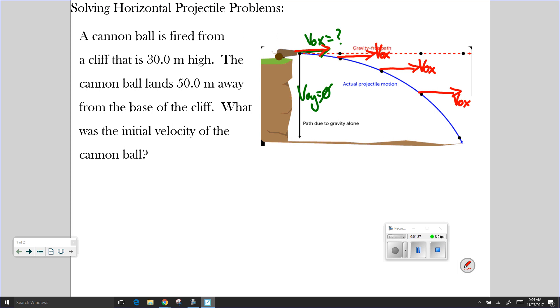Otherwise, I could say the initial velocity in the x direction is going to be the final velocity in the x direction. And again, because gravity only works up and down.